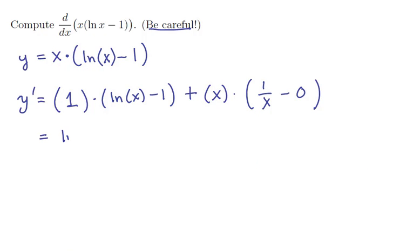Cleaning it up. The first term is just ln x minus 1. We don't need that 1. Plus, let's see, the 0 doesn't matter, so x times 1 over x is positive 1. Notice that these two terms cancel, and so we get ln of x. And that's what we get for our derivative.